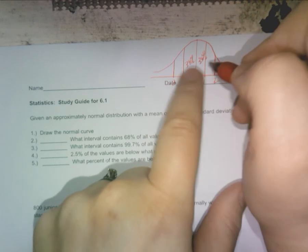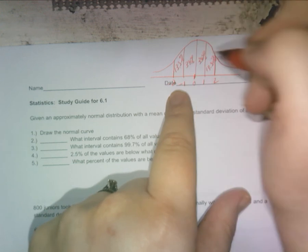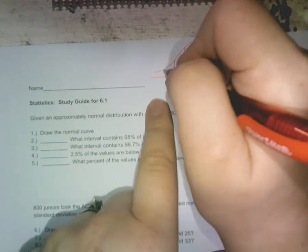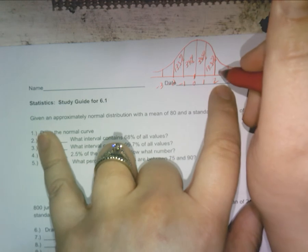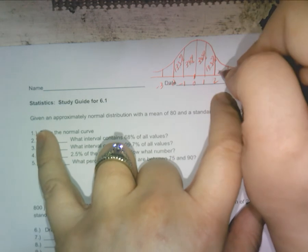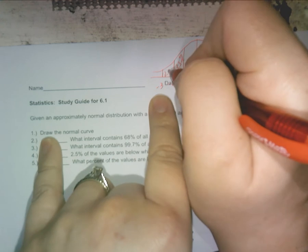Then at standard deviation two and one, what did each one of these make? Do you remember 13.5? Again please, if you don't have this on the note card, put it there now. And then at standard deviation three and negative three, so this one was 2.35 and this one is 0.15 percent, and same thing over here because it's symmetric.